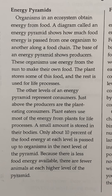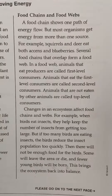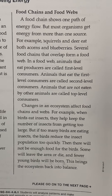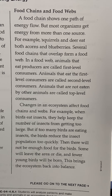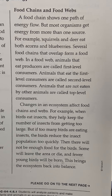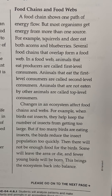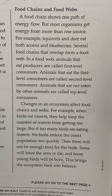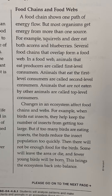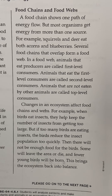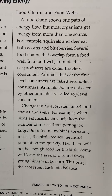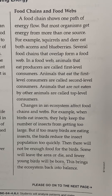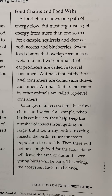Because there is less food energy available, there are fewer animals at each higher level of the pyramid. A food chain shows one path of energy flow, but most organisms get energy from more than one source. For example, squirrels and deer eat both acorns and blueberries. Several food chains that overlap form a food web. In a food web, animals that eat producers are called first level consumers, animals that eat first level consumers are called second level consumers, and animals that are not eaten by other animals are called top level consumers.